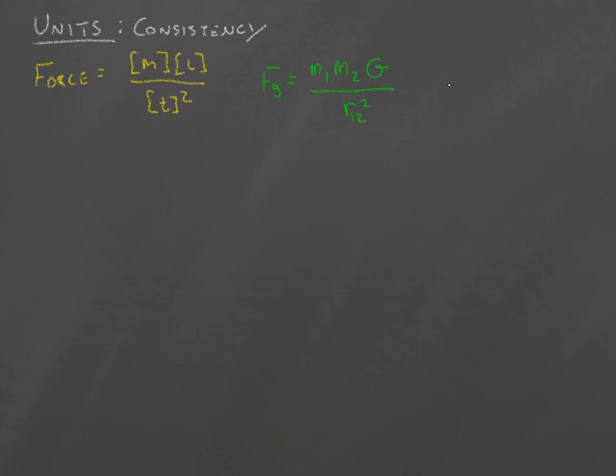Well, if we look at the units of this, we see that the units are mass squared times the units of G divided by length squared.